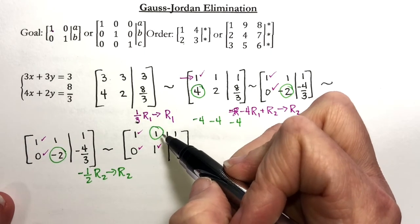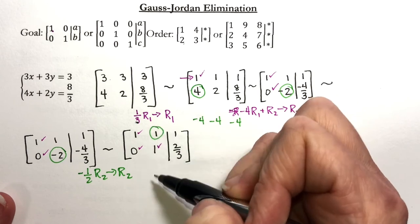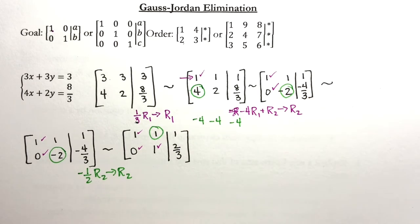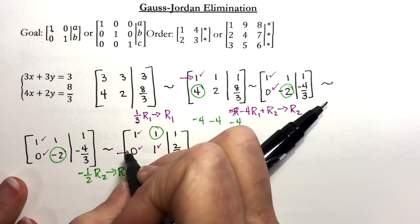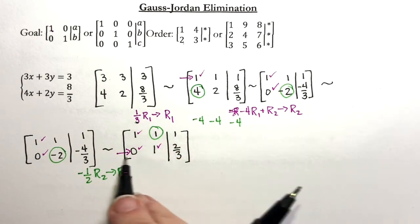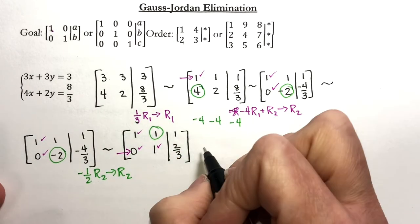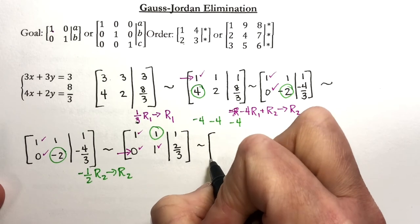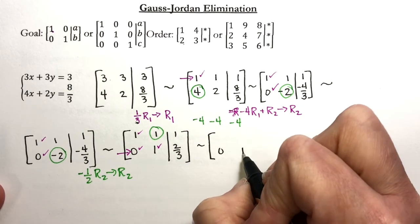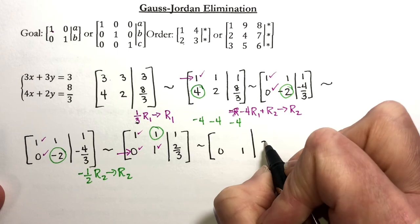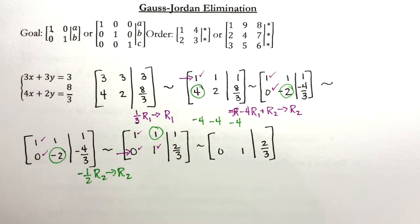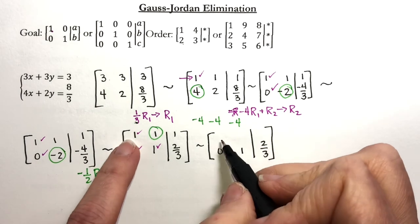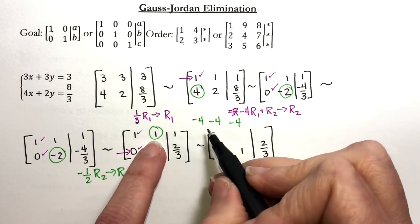Now remember, when we're creating a zero, we have created a one somewhere in that column. And where have I created that one? Right here in the second row. That means this is going to be my tool row, and it is not going to change.